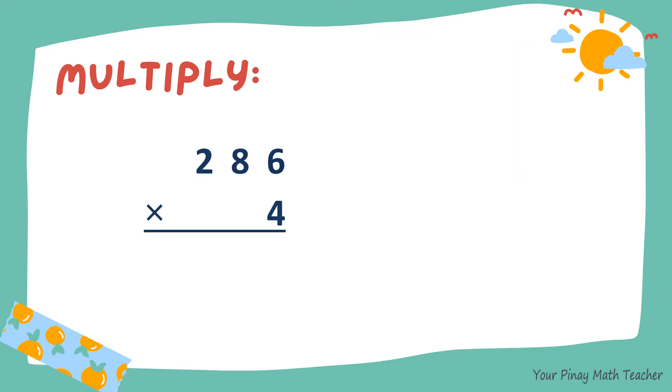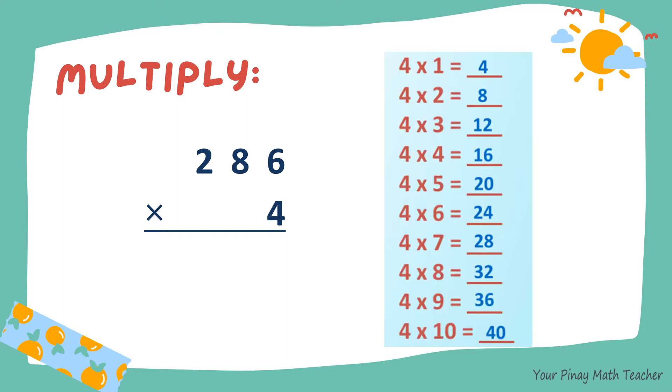Next, 286 times 4. 4 times 6 is 24. So 4 carry 2. 4 times 8, 32. Plus 2, 34. 4 times 2, 8. Plus 3, 11. So when 286 is multiplied by 4, the product is 1,144.